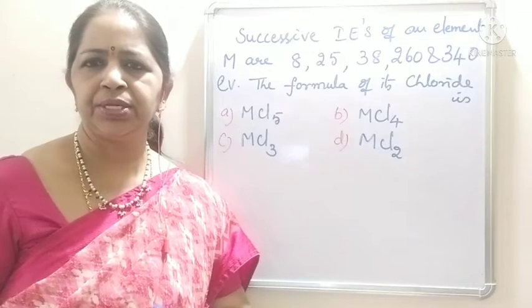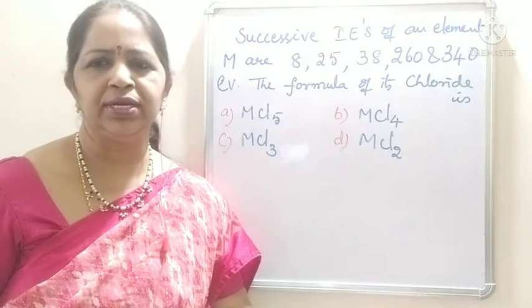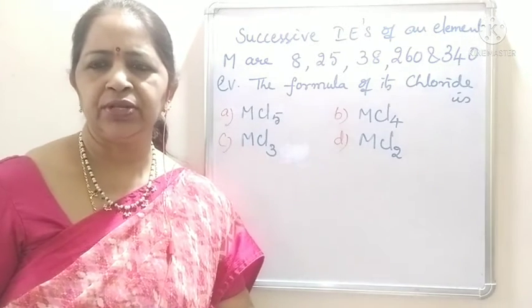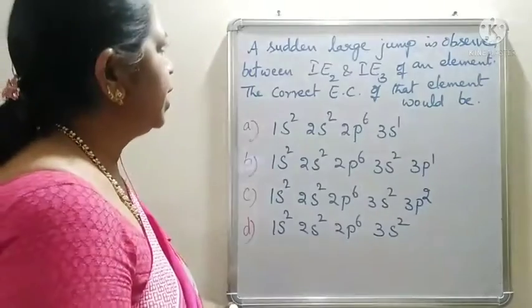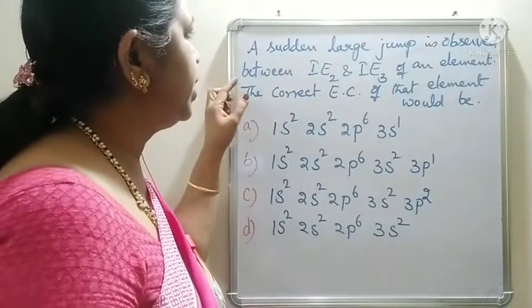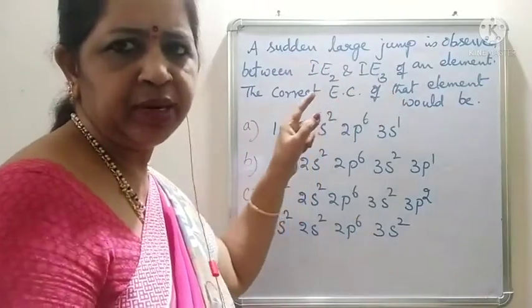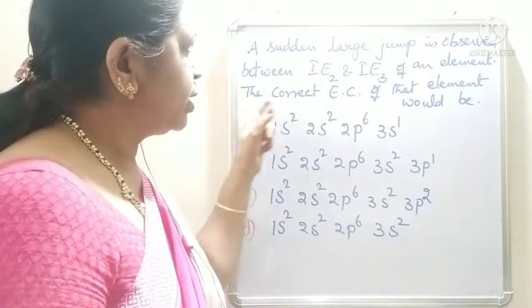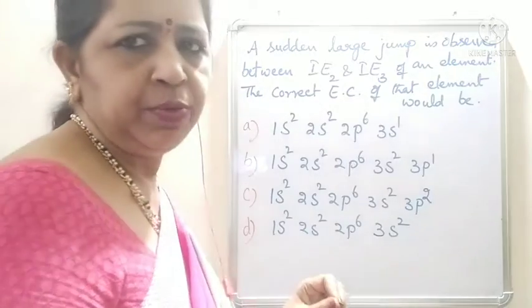Welcome back students. This is the continuation of my previous video on NCERT exemplar questions on the periodic table. Now let us see one more question. A sudden large jump is observed between IE2 and IE3 of an element. The correct electronic configuration of that element would be what?